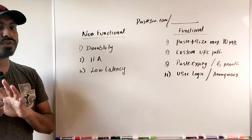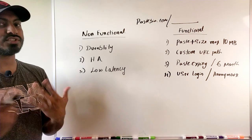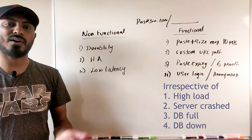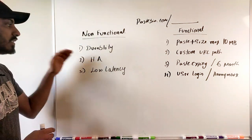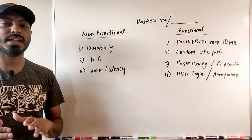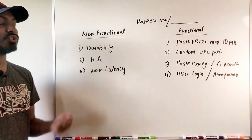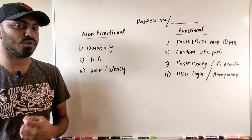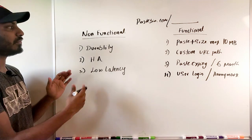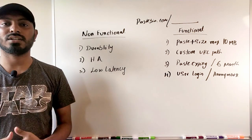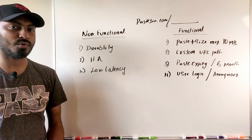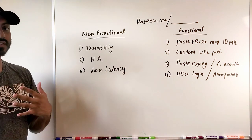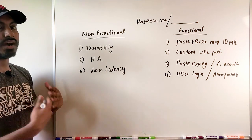The first non-functional requirement is durability — once you write data, it should always be there. You shouldn't get a 'data not found' error when visiting a paste link. The second is high availability, and the third is low latency, meaning you should be able to access the paste via URL as fast as possible. To find non-functional requirements, look at the 12 quality attributes of system design, which include testability, maintainability, and reliability.